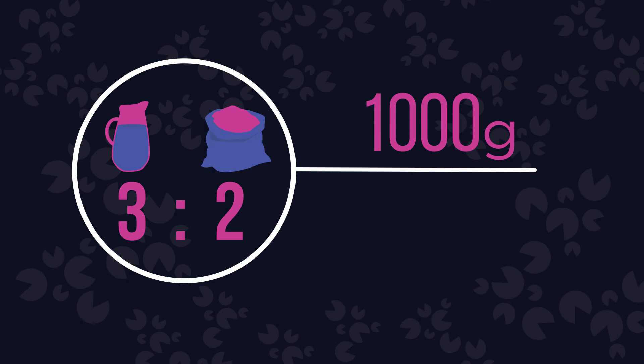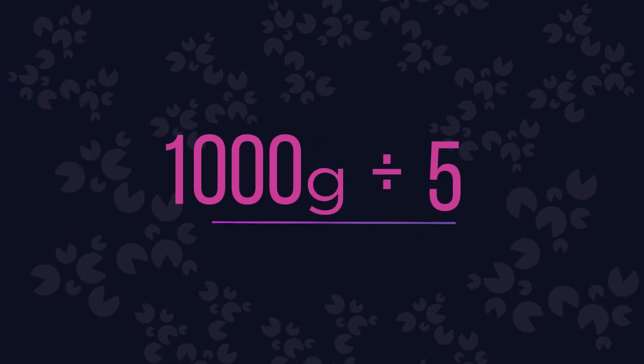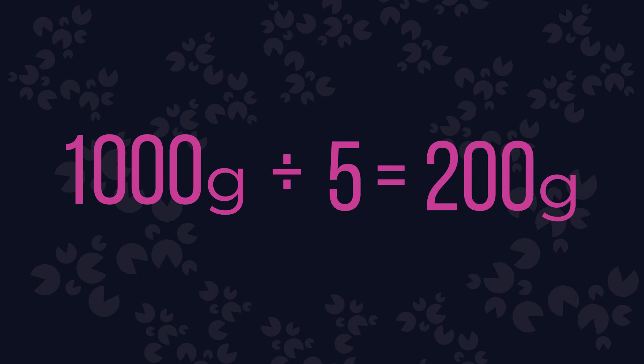First, add the ratios. Three plus two is five. Next, we must divide 1000 by five to see how much one part weighs. One part is 1000 divided by five, which equals 200 grams each.